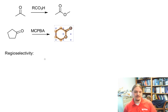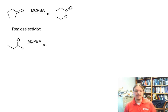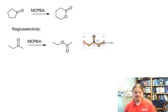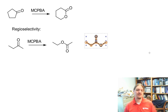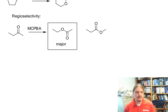From a regioselectivity standpoint, things get interesting once we have ketones with different groups on either side. When methyl ethyl ketone (2-butanone) reacts, there are two possible products: ethyl acetate, where oxygen is inserted on the ethyl side, and methyl propanoate, where oxygen is inserted on the methyl side. It turns out the first one — ethyl acetate — is the major product.